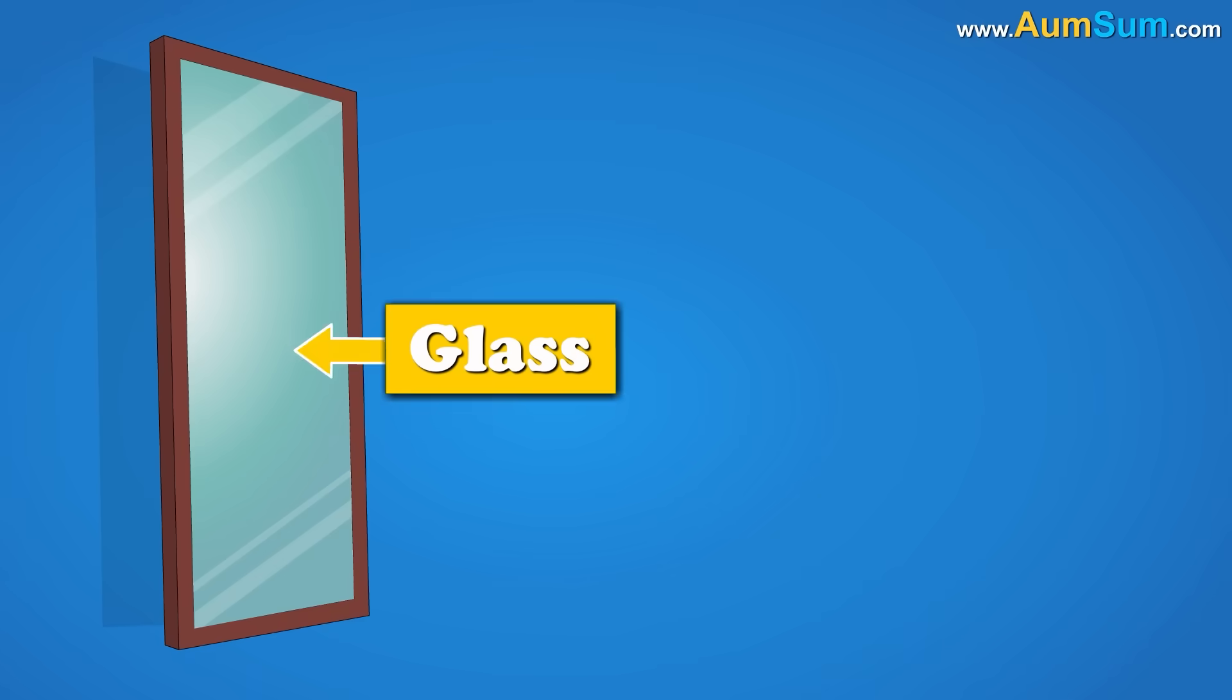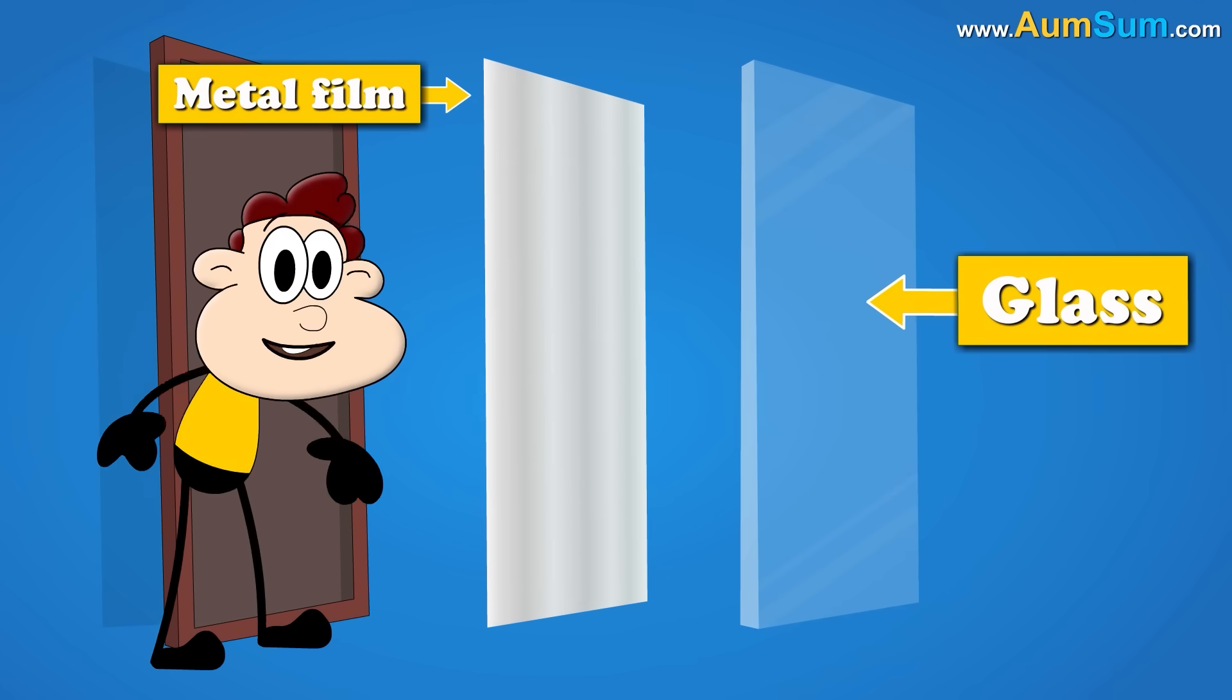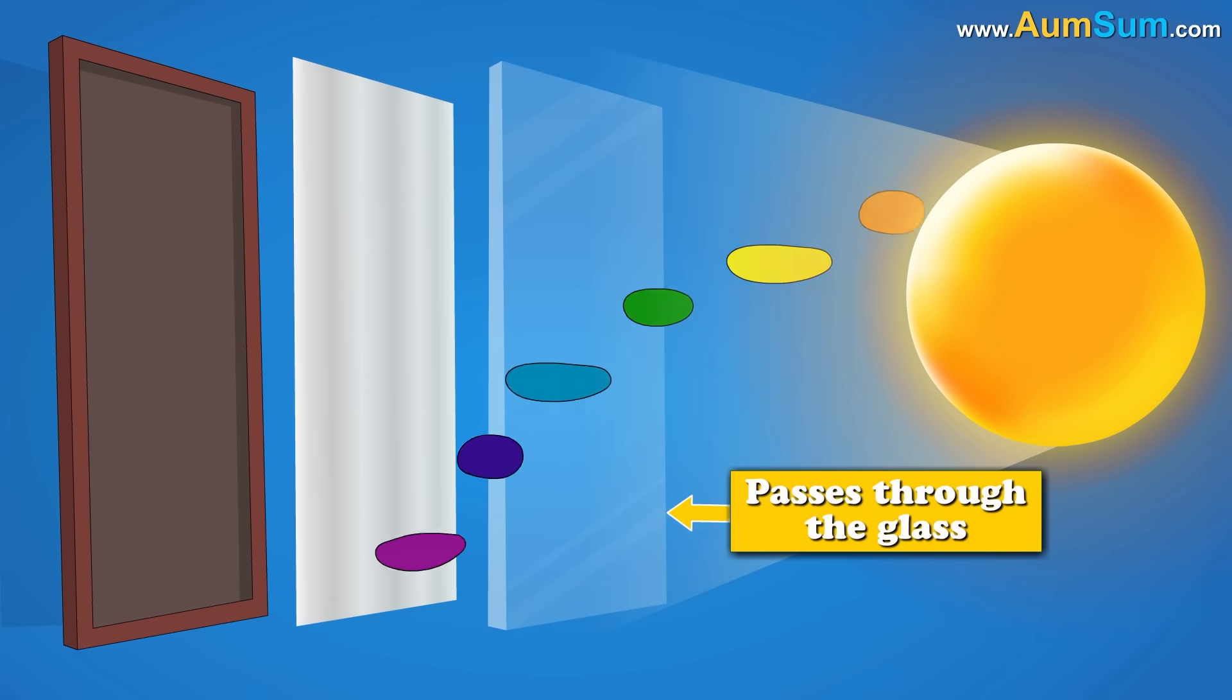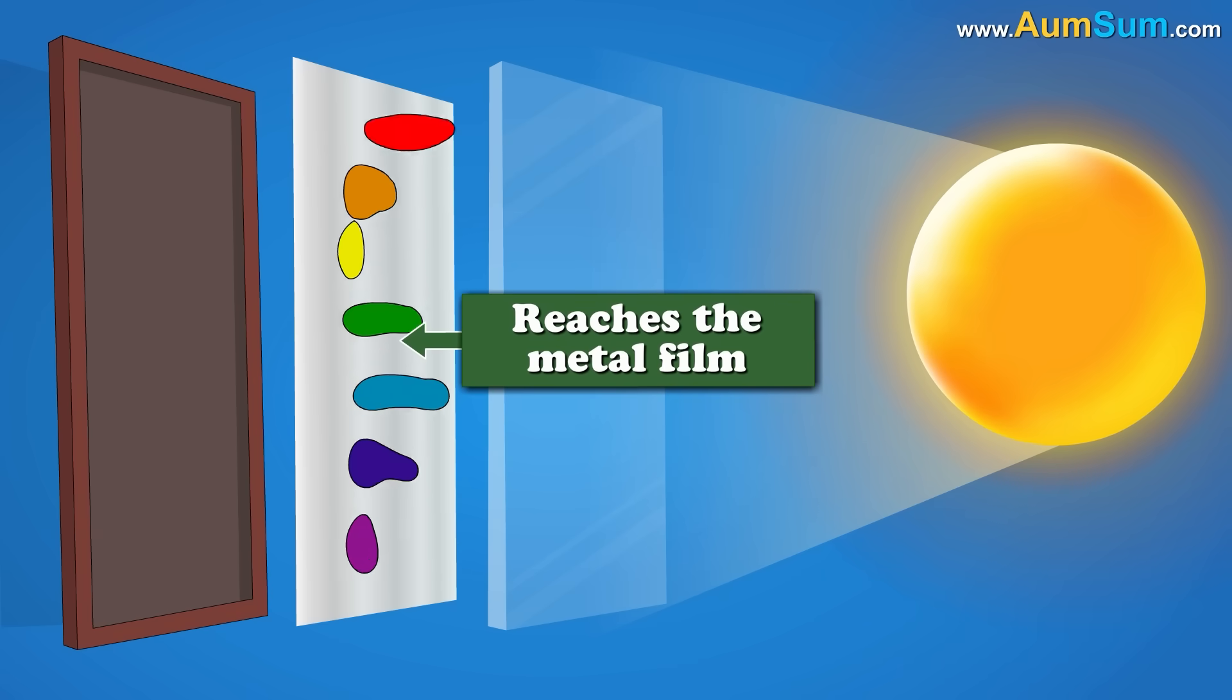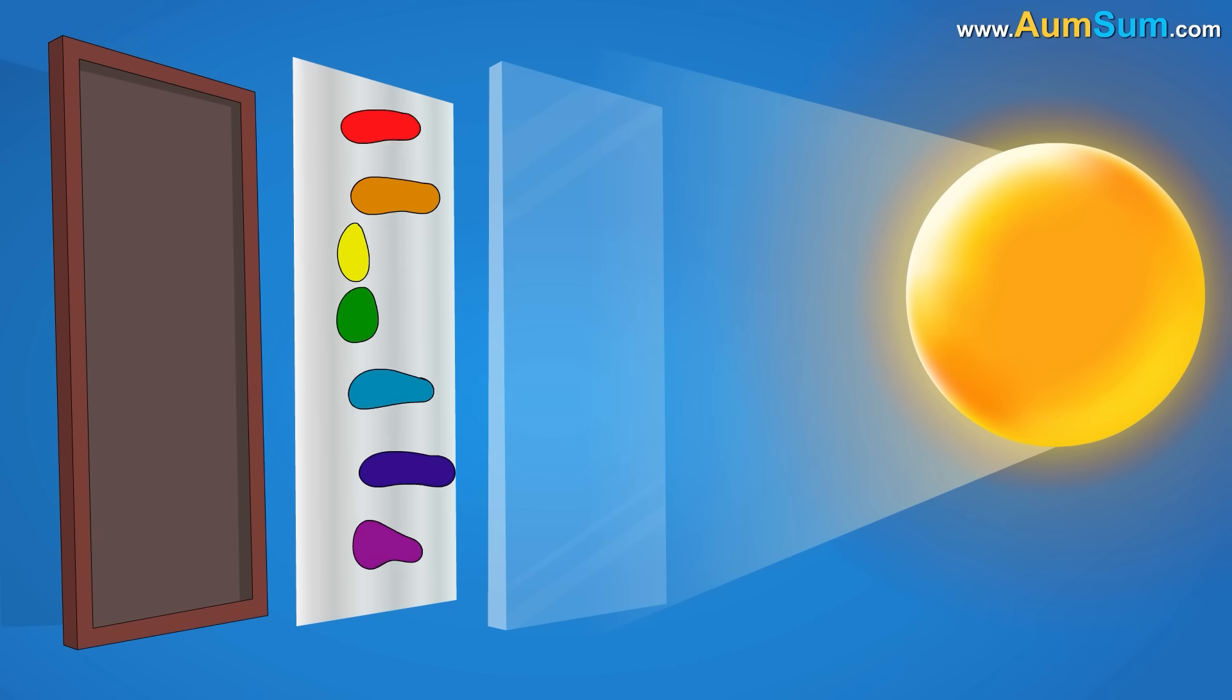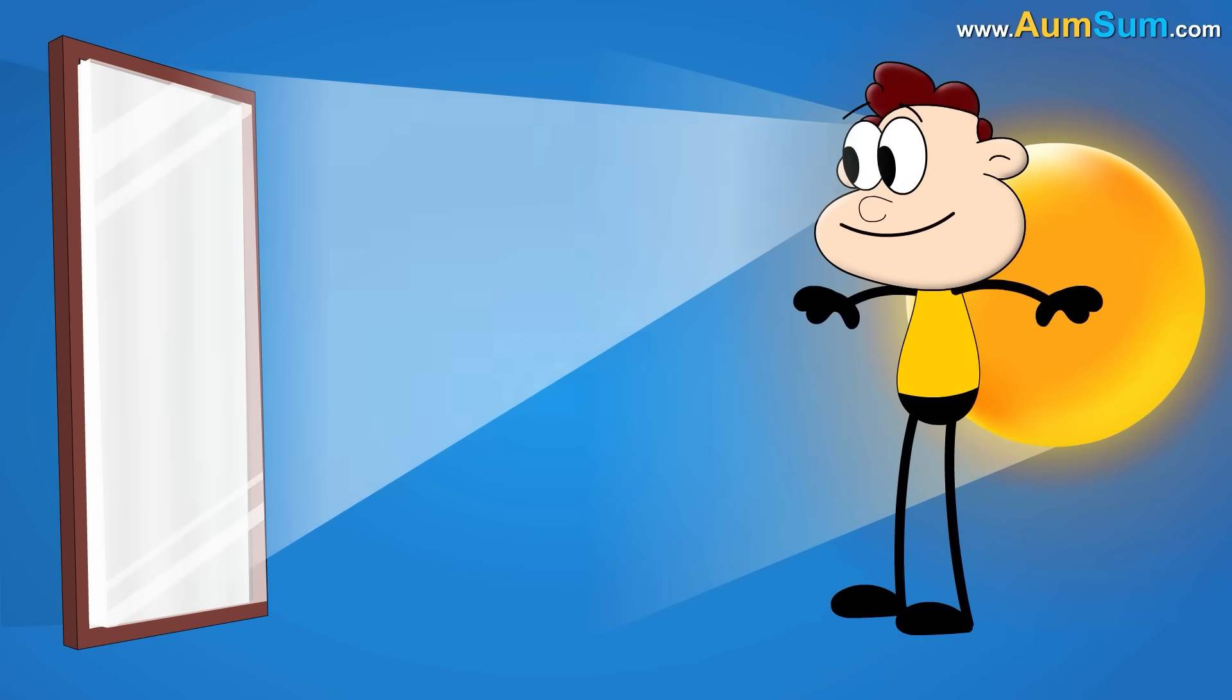Now, a mirror consists of a glass surface with an extremely smooth and thin layer of metal film behind it. When light hits a mirror, it passes through the glass part and reaches the metal film. The metal film does not absorb any colors of light. It reflects back all of them. Hence, we are able to see ourselves in a mirror.